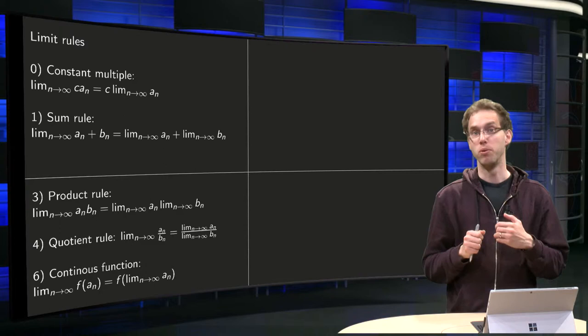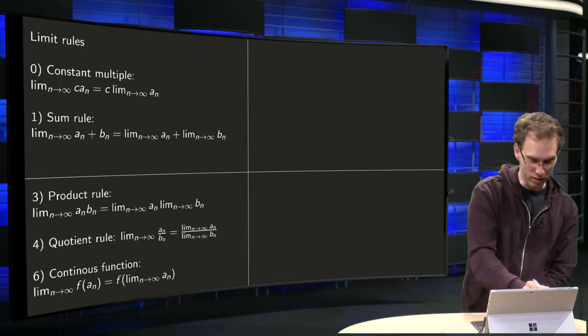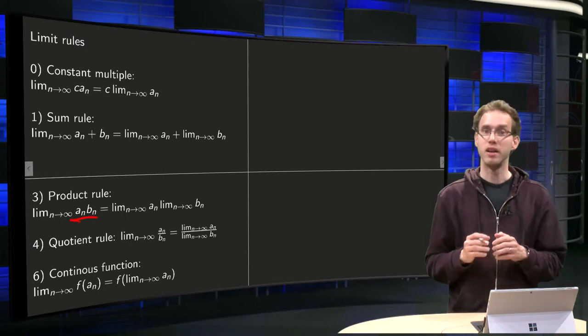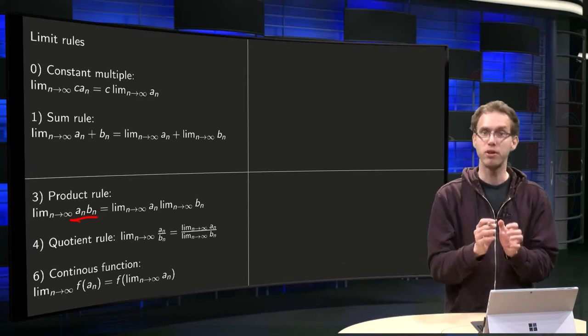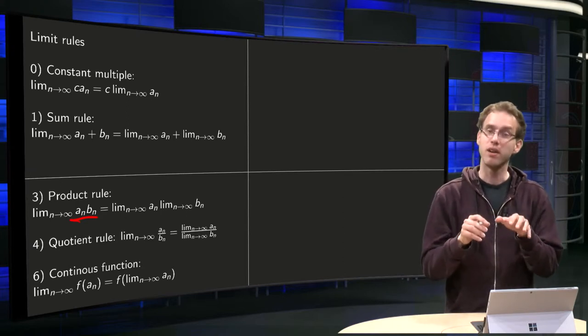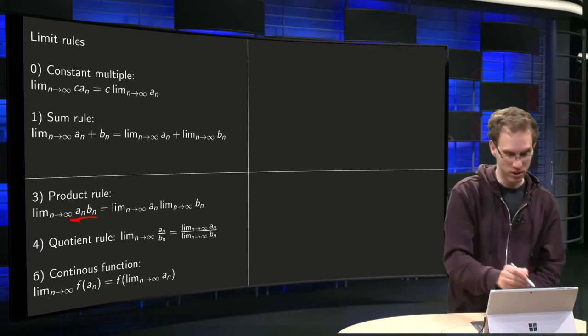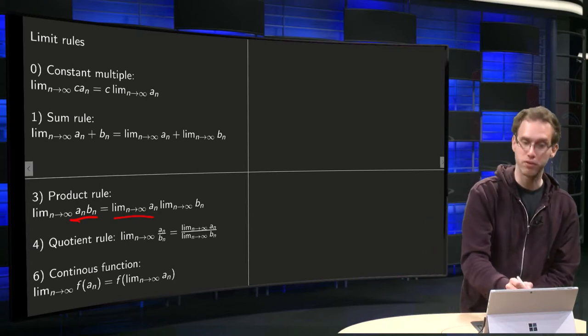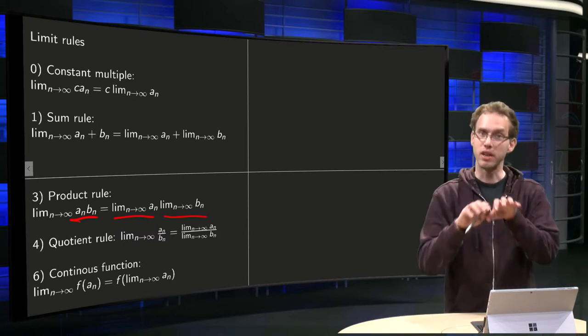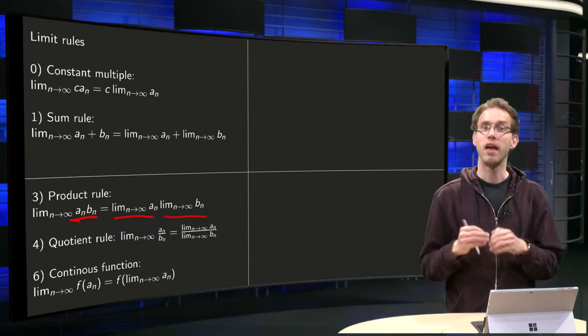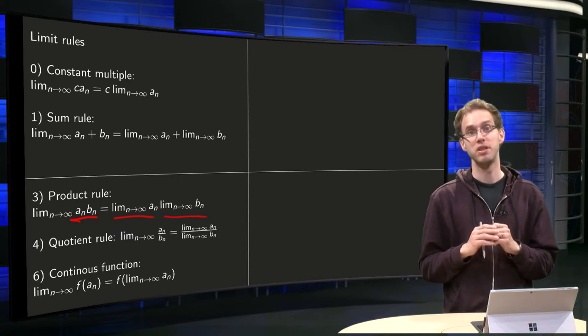Next, product rule. Again, what is the product rule? Well, if you have a product, limit n to infinity an bn, then you can compute either the product first or take first the limit and then the product. So compute limit n to infinity an times limit n to infinity bn. So you can take them apart, if both limits exist.